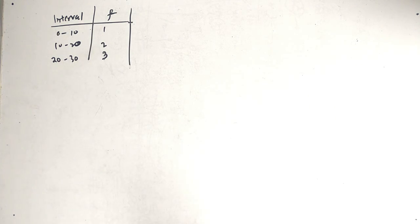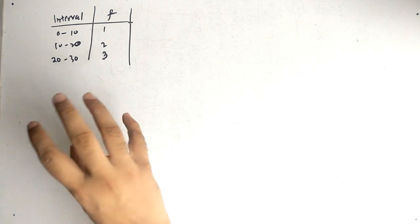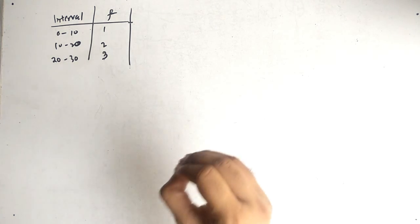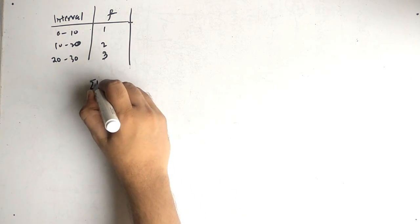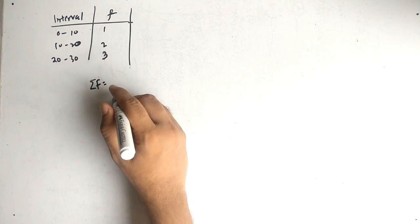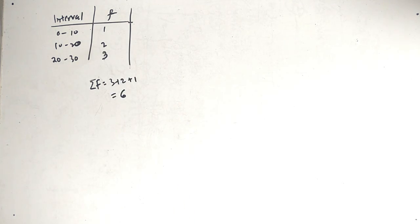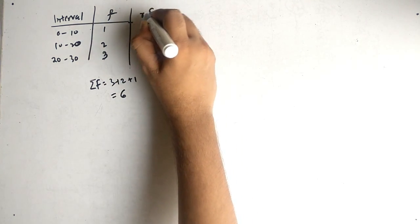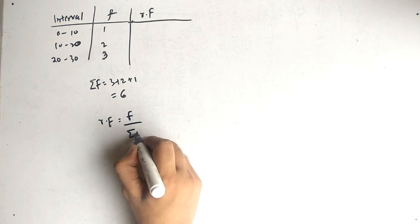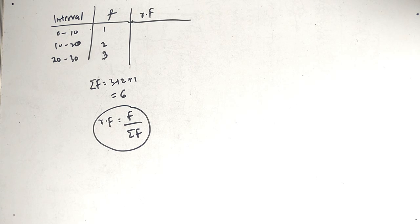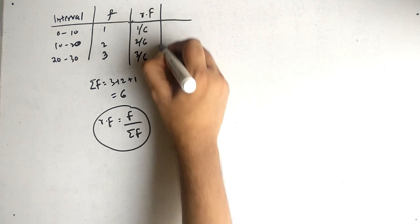Now we have to draw the Ogive graph. We have interval and frequency, and using this information we have to find the cumulative relative frequency. First, find the summation of frequency: 3 plus 2 plus 1 equals 6. Then find the relative frequency, which is frequency divided by the summation of frequency. So we get 1/6, 2/6, and 3/6.